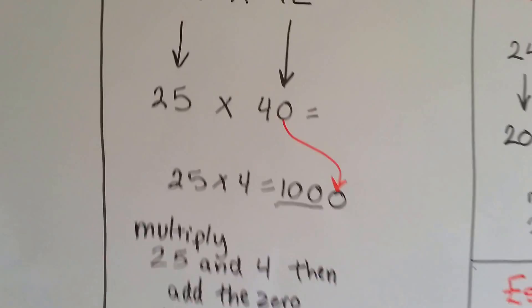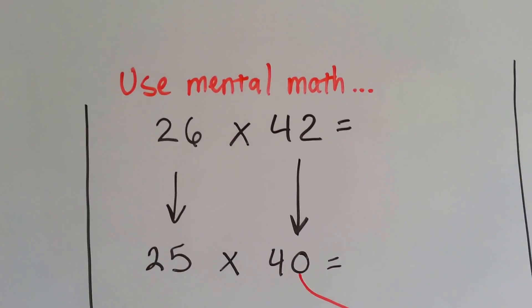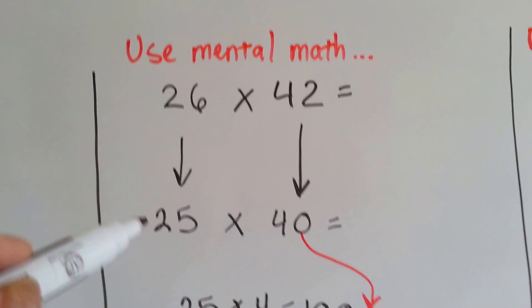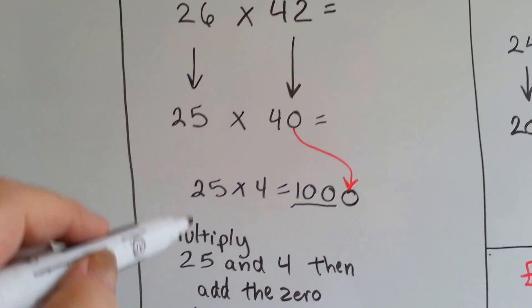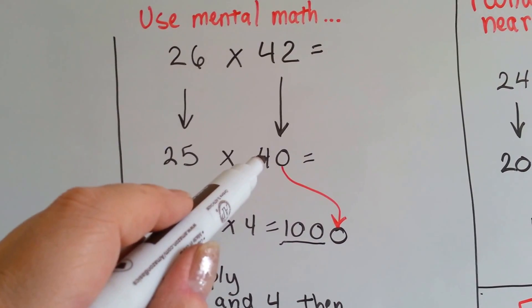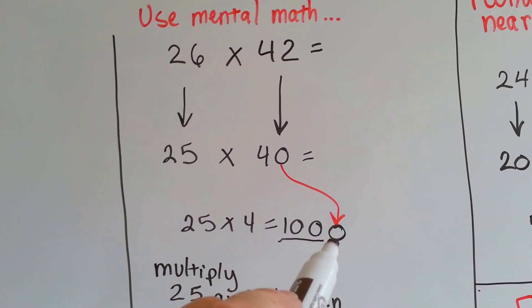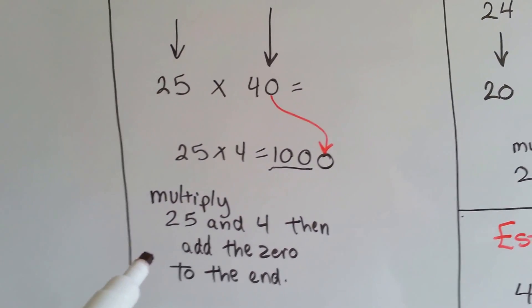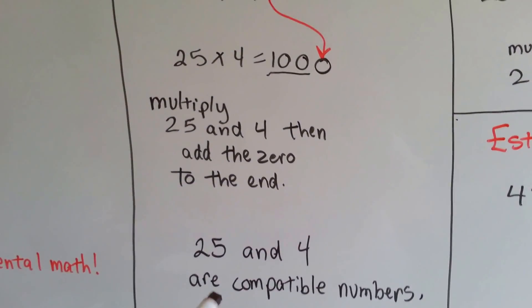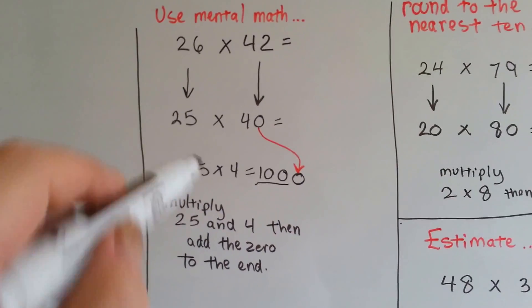Let's try this one. You can use mental math on this one. Twenty-six times forty-two. Twenty-six is really close to twenty-five. And if you use compatible numbers, twenty-five times forty would be like twenty-five times four. Remember? That's a hundred, and then you add the other zero. So, you multiply the twenty-five and the four, and then add the zero to the end. Twenty-five and four are compatible numbers, so it would be very easy to do that mentally. You could do that in your head.